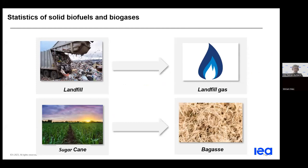Let's go to the statistics of solid biofuels and biogases. Now that I've given you an overview of the renewable products, let me clarify the statistical boundaries for some of them according to international recommendations. Regarding biofuels, most are made from other sources — for example, landfill gas originates from waste in landfills and bagasse from sugarcane. We assume these are primary products to be consistent with international definitions, IRES, and also because not doing so can lead to an exponential amount of work in data collection.